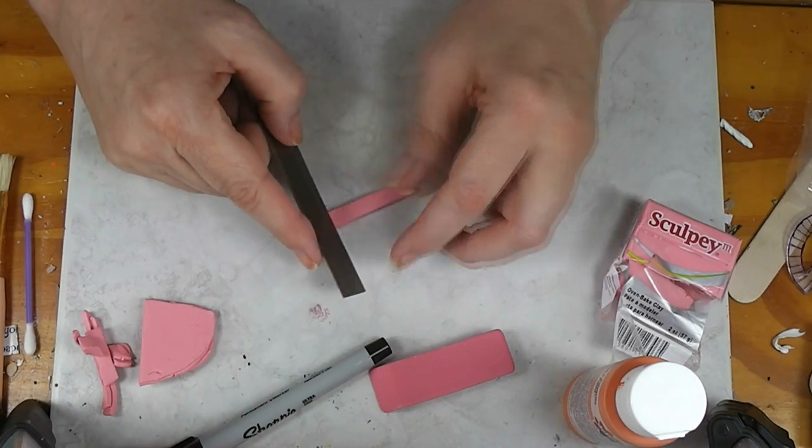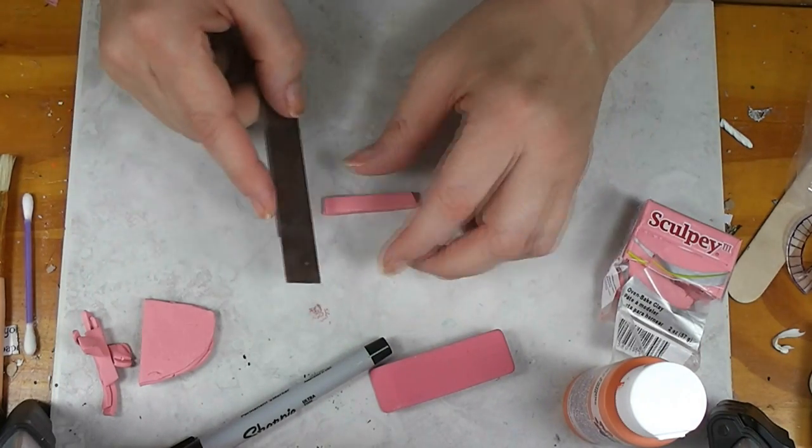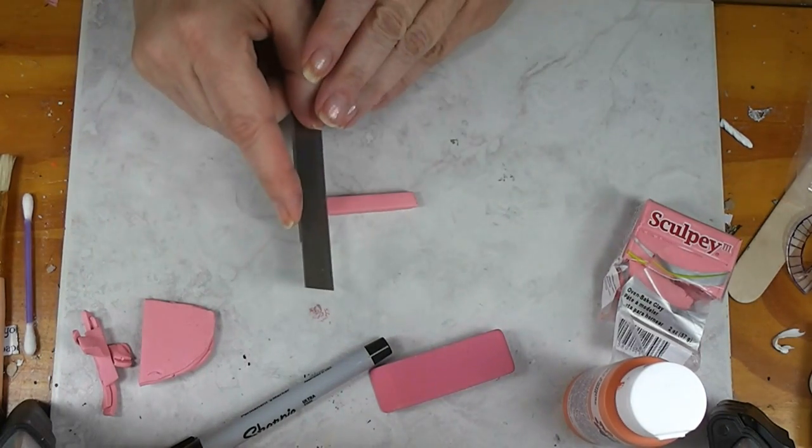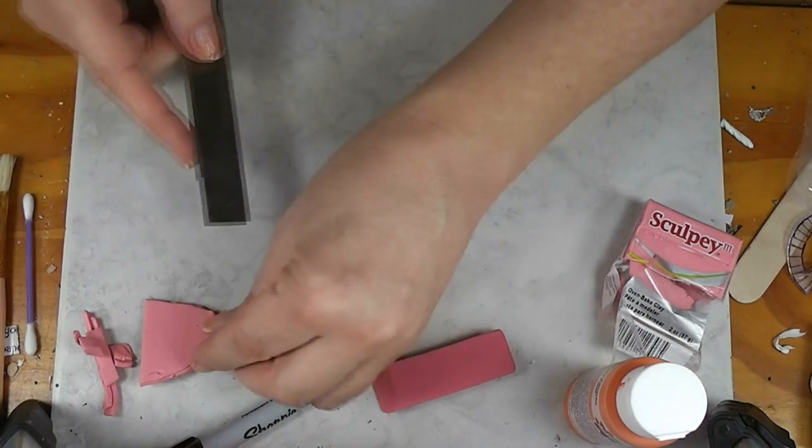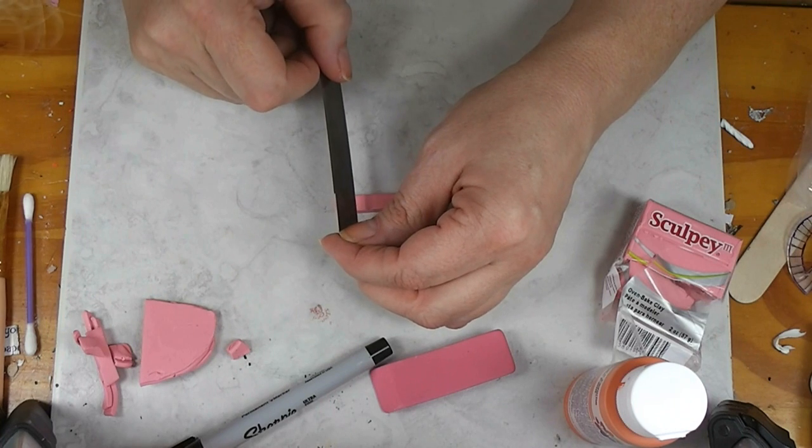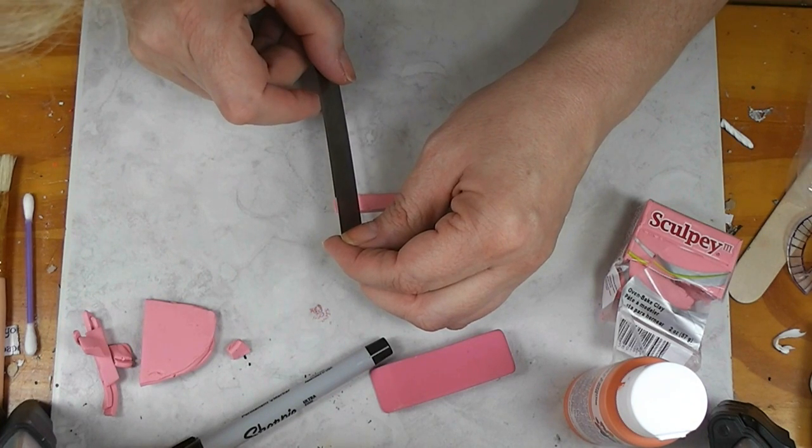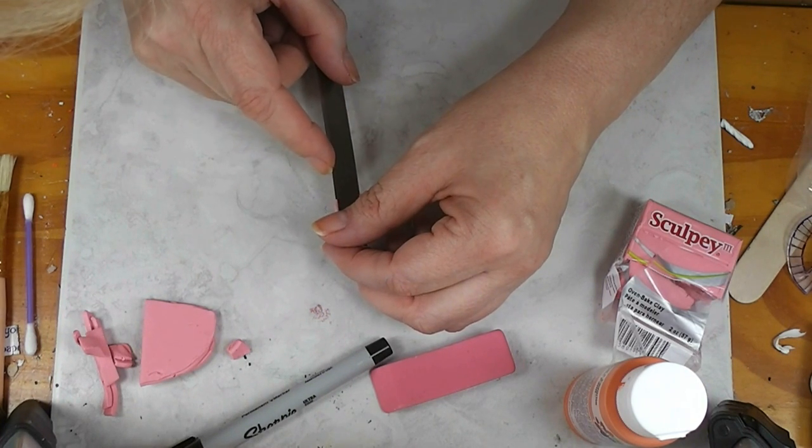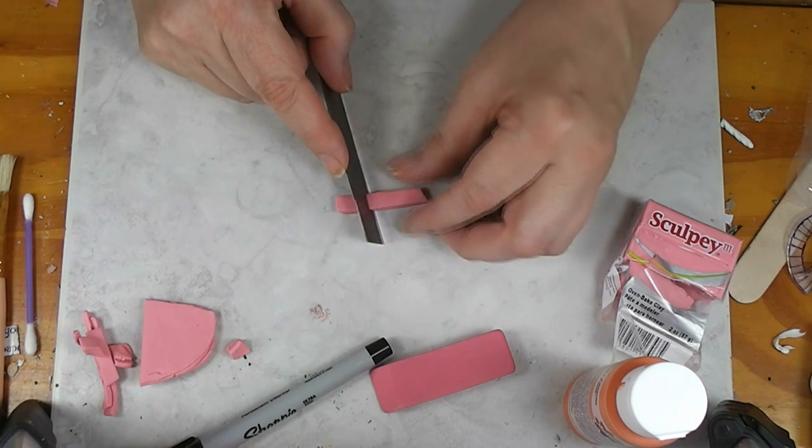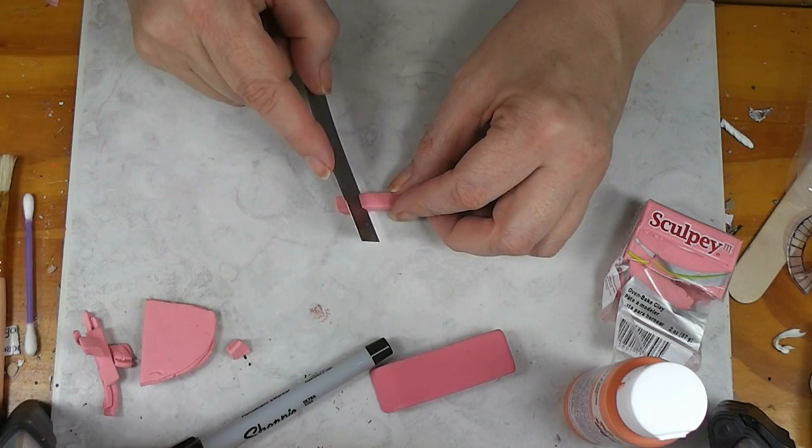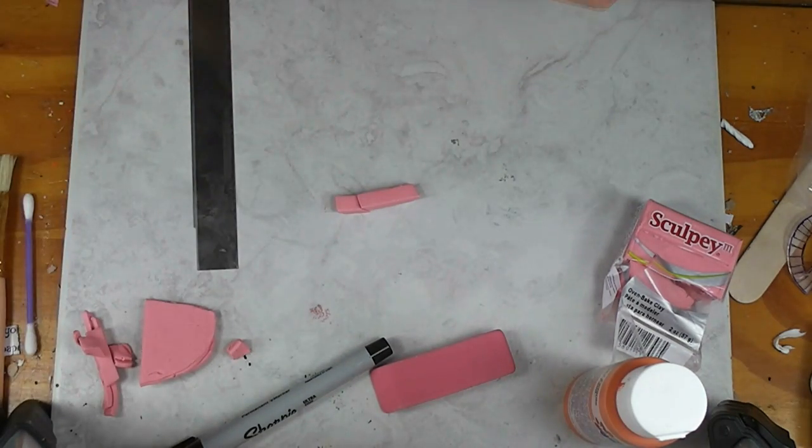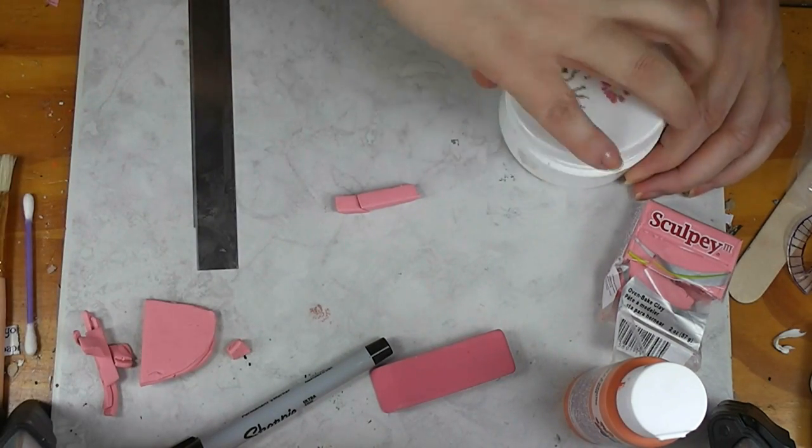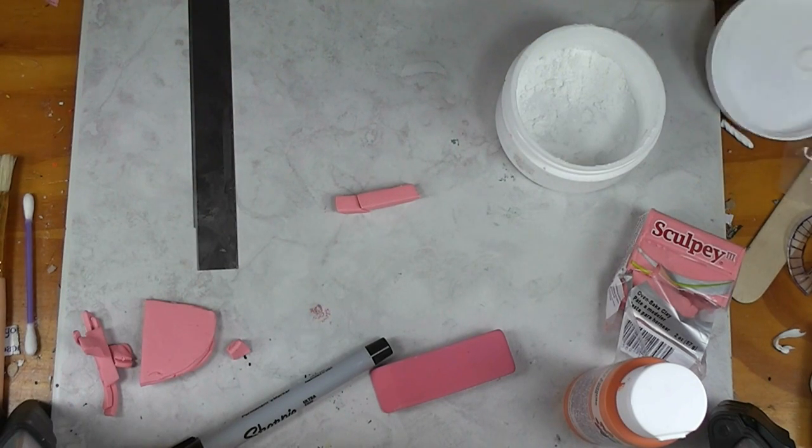Now I'm going to cut at an angle. I'm holding my knife at an angle. And now I'm going to go down to where it looks about right. Since these erasers come in lots of sizes, I mean there are small ones. And if your clay sticks, take some cornstarch. There's my brush.